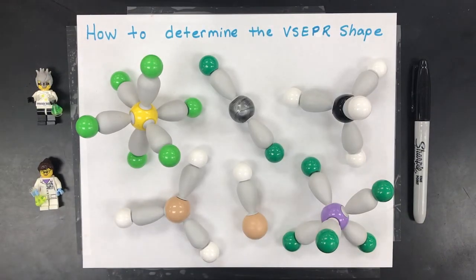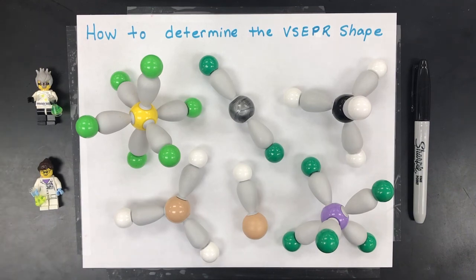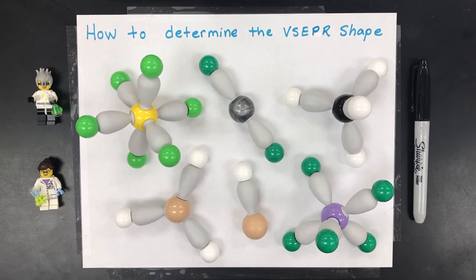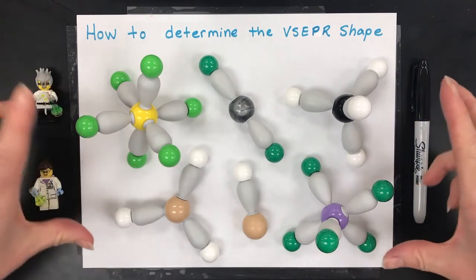In this video I'm going to go through how to determine the VSEPR shape for a molecule. These are all the possible molecular shapes in chemistry — these are the major regions of electron density, also called electron coordinated geometry. Here are the possible shapes.